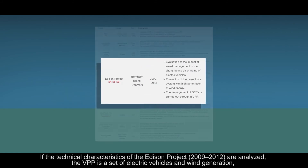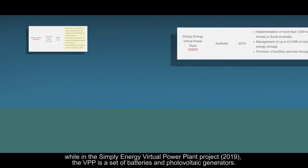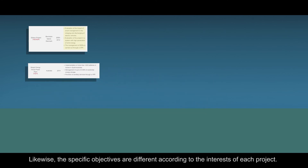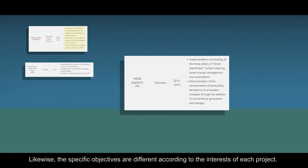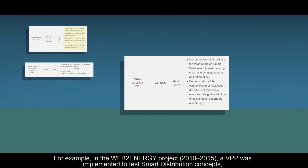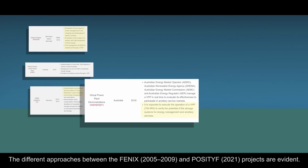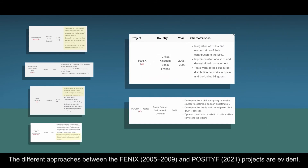If the technical characteristics of the Edison project are analyzed, the virtual power plant is a set of electric vehicles and wind generation. In the Simply Energy virtual power plant project, the virtual power plant is designed to offer ancillary services to the system. In the Web2Energy project, a virtual power plant was implemented to test smart distribution concepts, while in the Virtual Plant Demonstrations project, the virtual power plant is managed to offer ancillary services to the system. The different approaches between the Phoenix and Positive projects are evident.